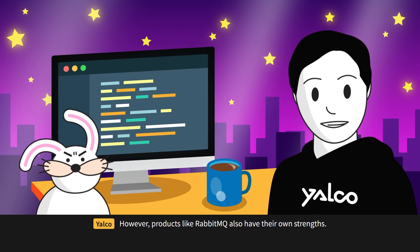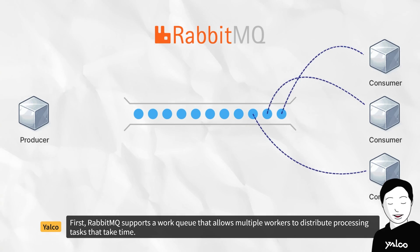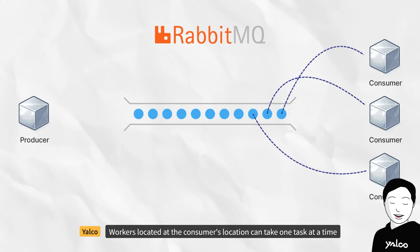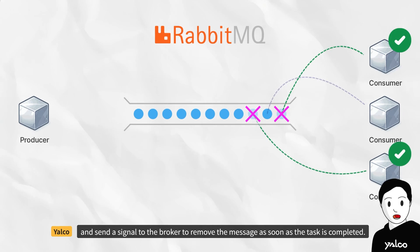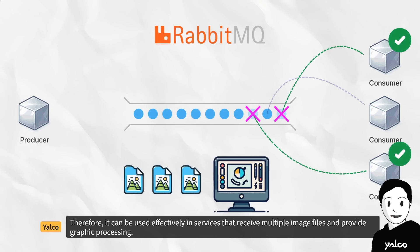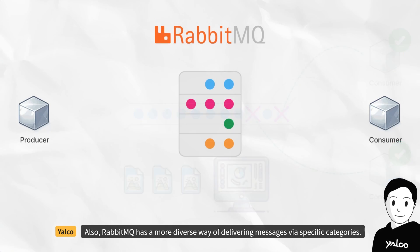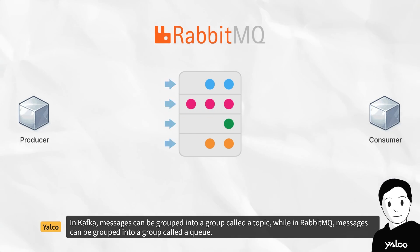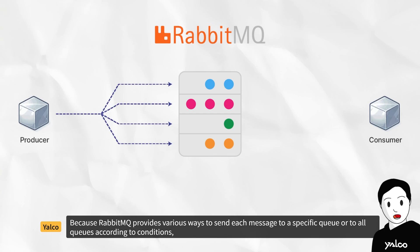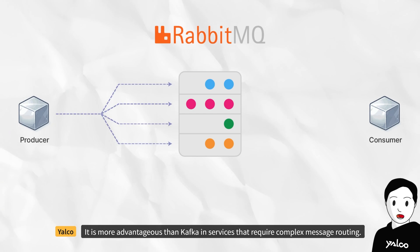However, products like RabbitMQ also have their own strengths. RabbitMQ supports a work queue that allows multiple workers to distribute processing tasks that take time. Workers located at the consumer's location can take one task at a time and send a signal to the broker to remove the message as soon as the task is completed. Therefore, it can be used effectively in services that receive multiple image files and provide graphic processing. Also, RabbitMQ has a more diverse way of delivering messages via specific categories. In Kafka, messages can be grouped into a group called a topic, while in RabbitMQ, messages can be grouped into a queue. Because RabbitMQ provides various ways to send each message to a specific queue or to all queues according to conditions, it is more advantageous than Kafka in services that require complex message routing.